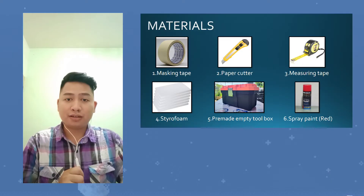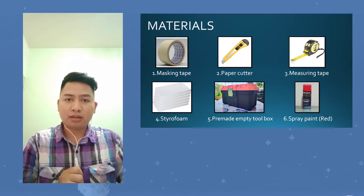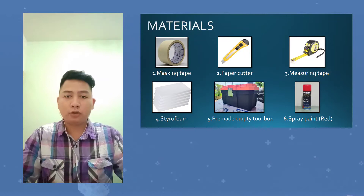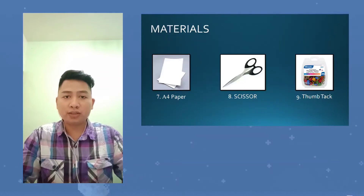There are materials for making the PWQT kit. All you need are masking tape, paper cutter, measuring tape, starter foam, pre-made empty toolbox, and a spray pen. For the WQI wheels, all you need are F4 paper, thumbtack, and scissors.